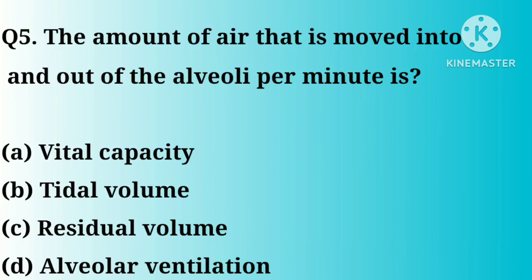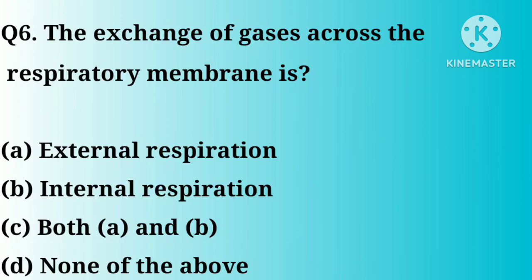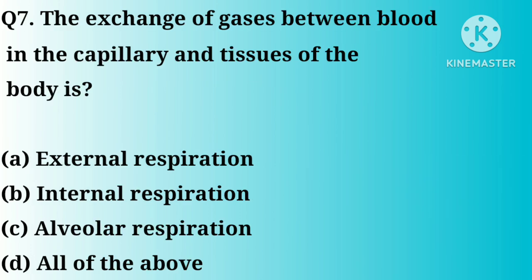Question number 5. The amount of air that is moved into and out of the alveoli per minute is: Option A. Vital capacity. C. Both A and B. D. None of the above. Correct answer: Option A.